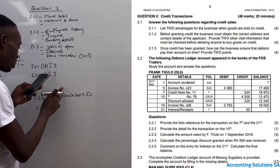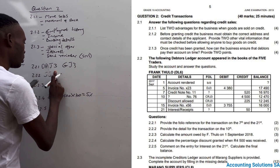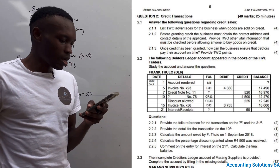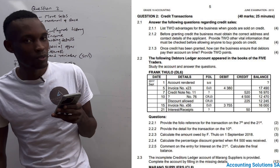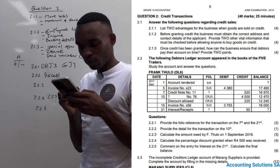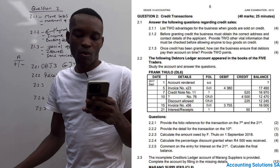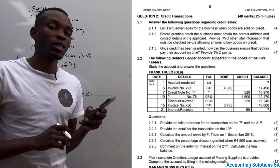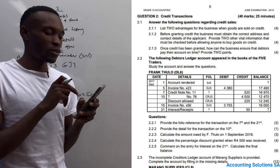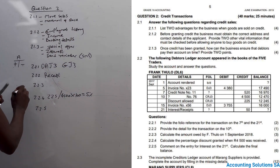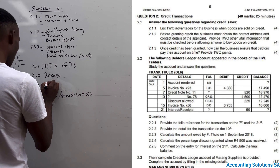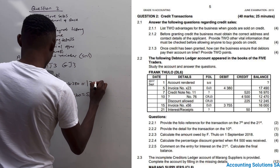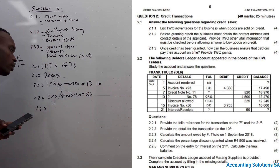Question 2.2.3: Calculate the amount owed by F. Total on 1 September 2018. Looking at the account, the balance after adjustment is 4380 on the debit side — meaning we need to reverse it. We take 17,490 minus 4,380, which gives us 13,110. That is the amount owed at the beginning on 1 September 2018.